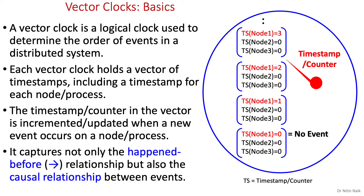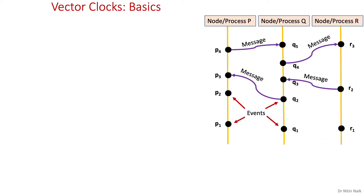I've explained both relationships in detail in the ordering of events video — you can find the link in the description below. Let's look at an example of Vector Clocks using the typical space-time diagram of a distributed system.